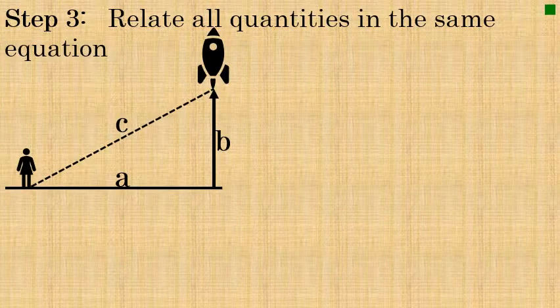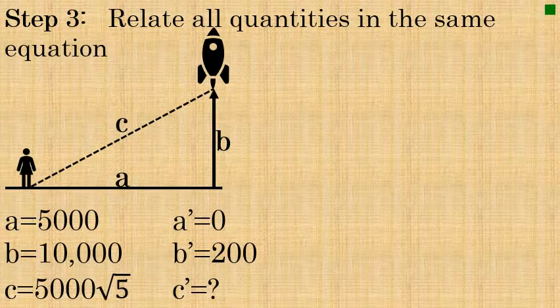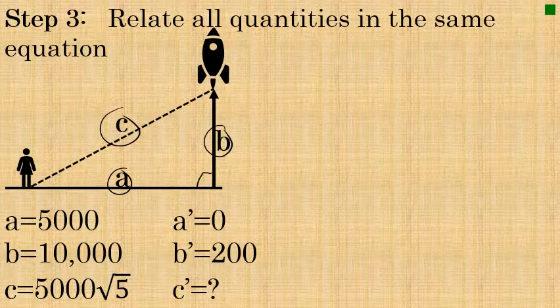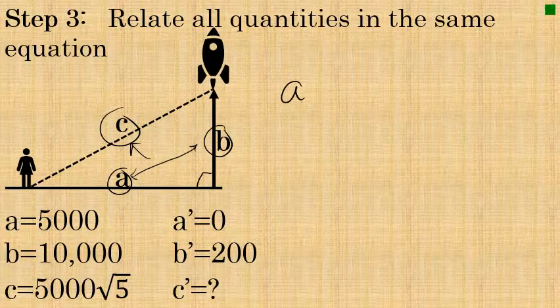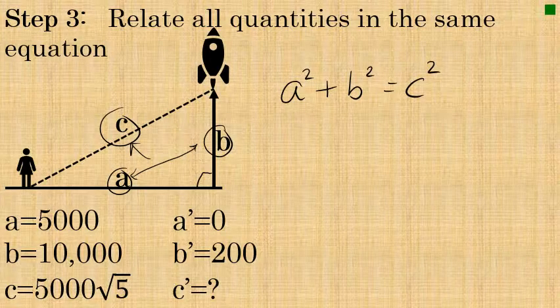In step three, we relate all quantities in the same equation. This is a step you have to think about — it will be different in every problem. In this case, since it's a right triangle, we need an equation relating all three sides A, B, and C. The Pythagorean theorem — a² + b² = c² — does exactly that, so we'll use it as our equation for step three.